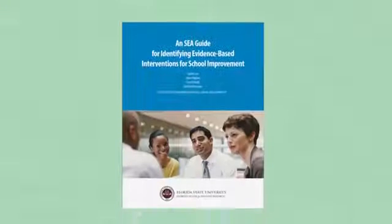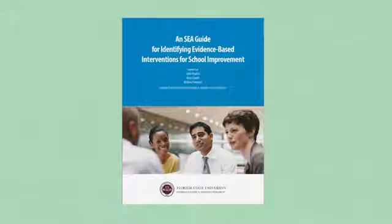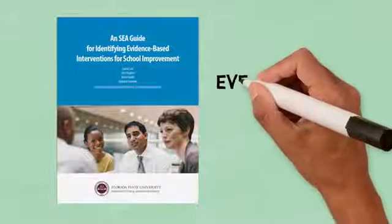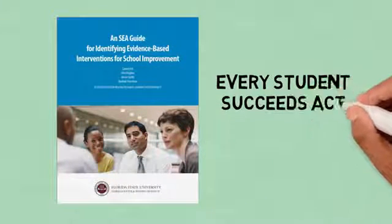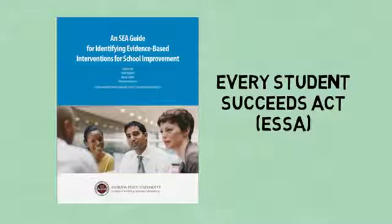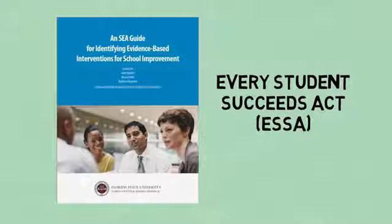The Guide for Identifying Evidence-Based Interventions for School Improvement is intended to help State Education Agencies, or SEAs, carefully consider the evidence supporting intervention options that they may require or recommend in their State Every Student Succeeds Act, or ESSA, plan and funding applications. SEAs could indicate in their State ESSA Plan how they have used or will use the self-study process described in this guide to identify interventions in partnership with stakeholders.